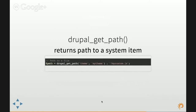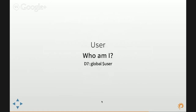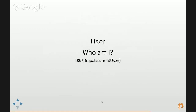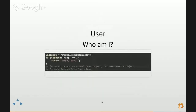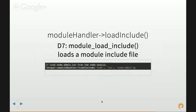drupal_get_path is still there — so if you want to load custom JS or CSS, you can still do that in Drupal 8. Global $user is gone; instead invoke the currentUser() static method from the global Drupal namespace. Note that the account returned is not an actual user object but a user session object extending the AccountInterface class. module_load_include is gone — instead use the loadInclude() method from the module handler class, available from the global Drupal namespace.